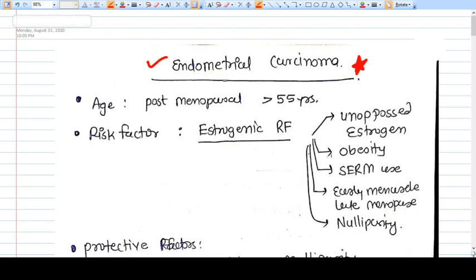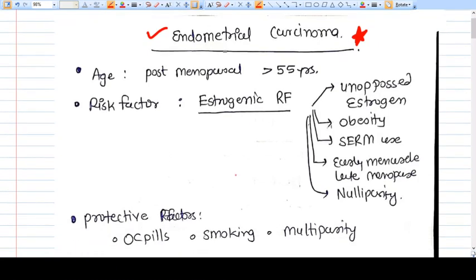Hello friends, in this video we are going to talk about endometrial carcinoma. The age of having endometrial carcinoma is postmenopausal, more than 55 years. Risk factors we already have discussed: estrogenic risk factors including unopposed estrogen.